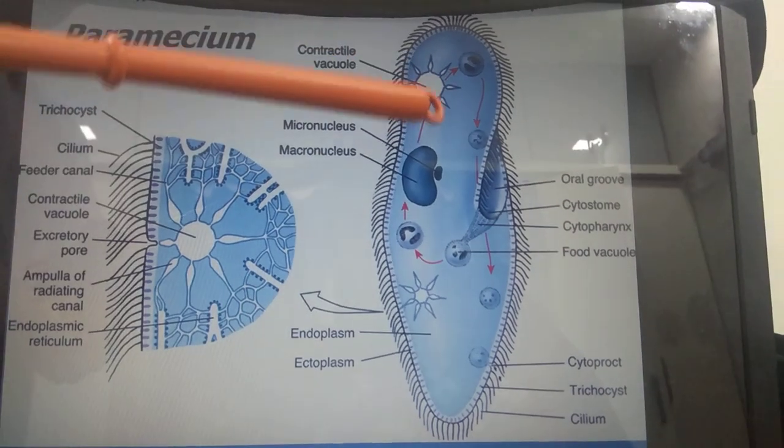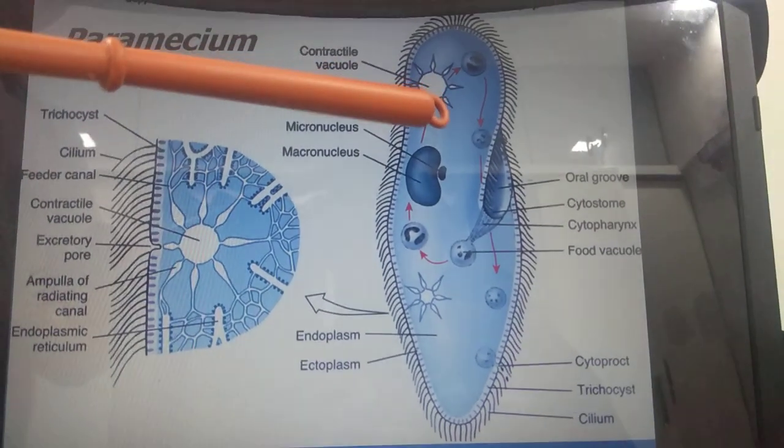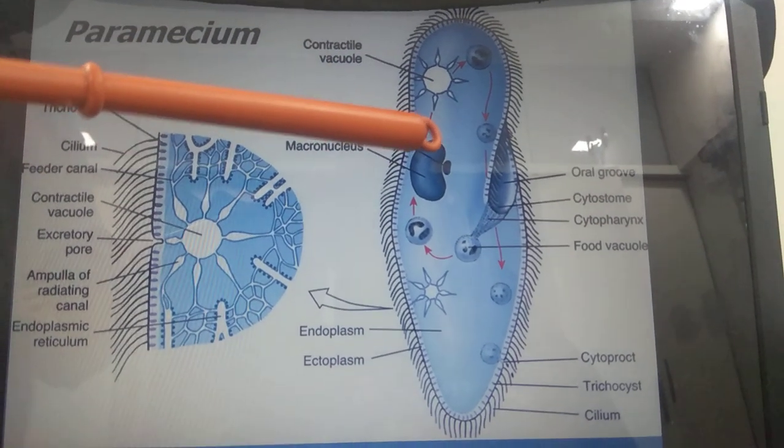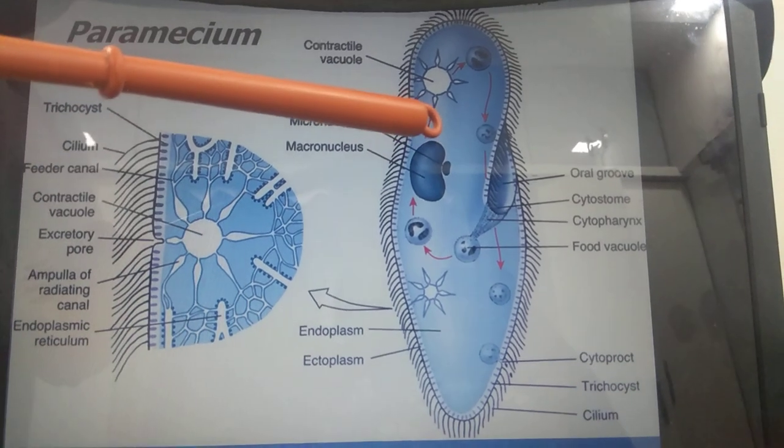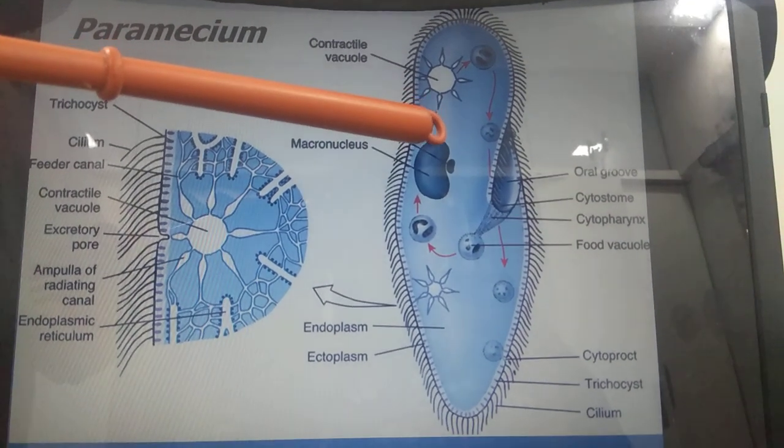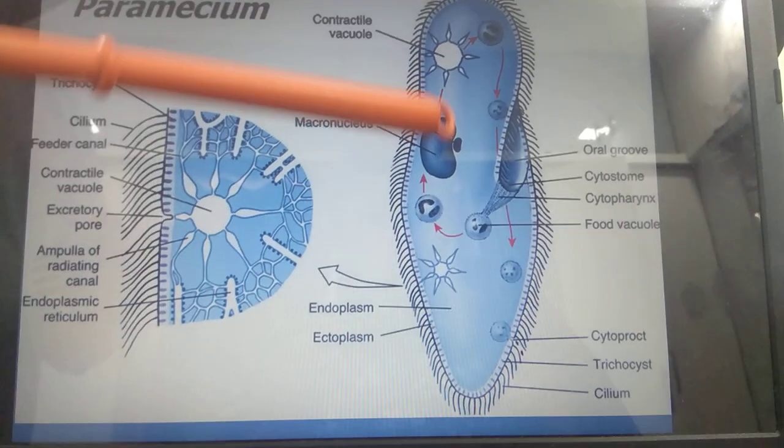These vesicle-like structures are called contractile vacuoles. The contractile vacuoles perform the function of water expulsion and osmoregulation of the animal.